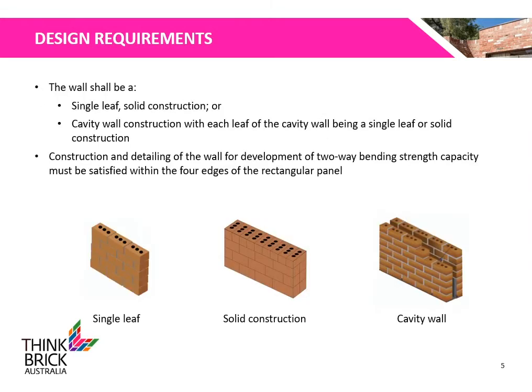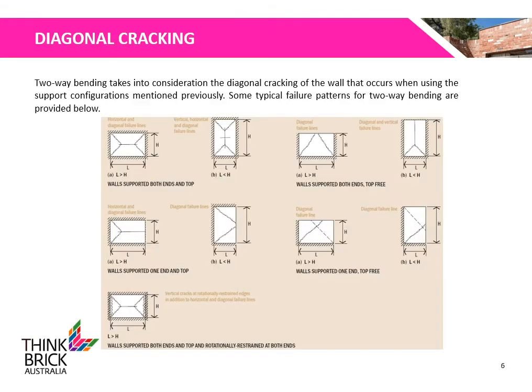Here are some other design requirements. The wall shall be a single-leaf solid construction, or cavity wall construction with each leaf of the cavity wall being a single leaf or solid construction. Construction and detailing of the wall for development of two-way bending strength capacity must be satisfied within the four edges of the rectangular panel. The figures below represent a single leaf, solid construction, and cavity wall. Two-way bending considers diagonal cracking of the wall that occurs when using the support configurations as mentioned previously. Some typical failure patterns for two-way bending are provided below.